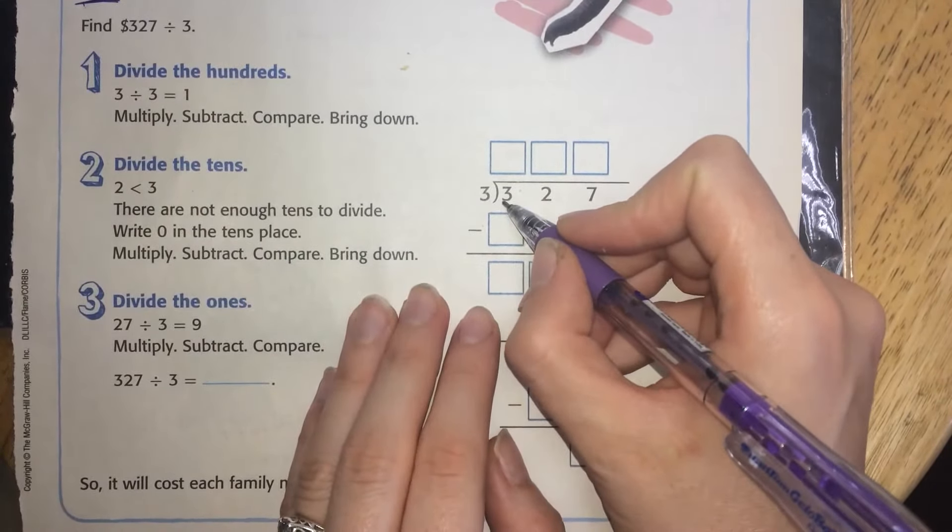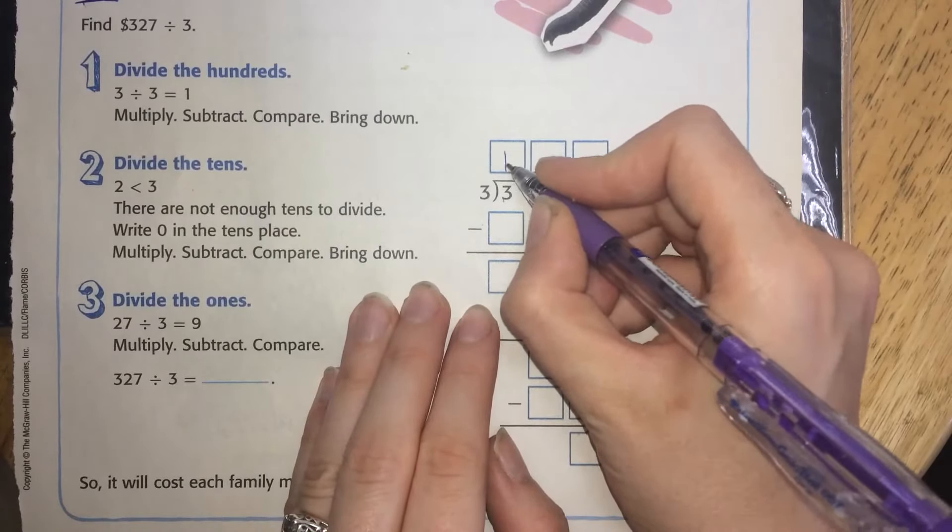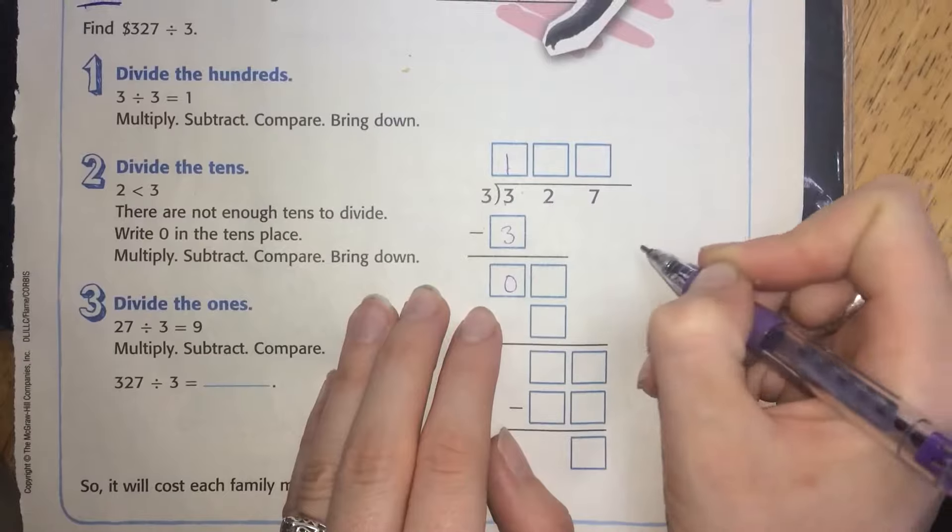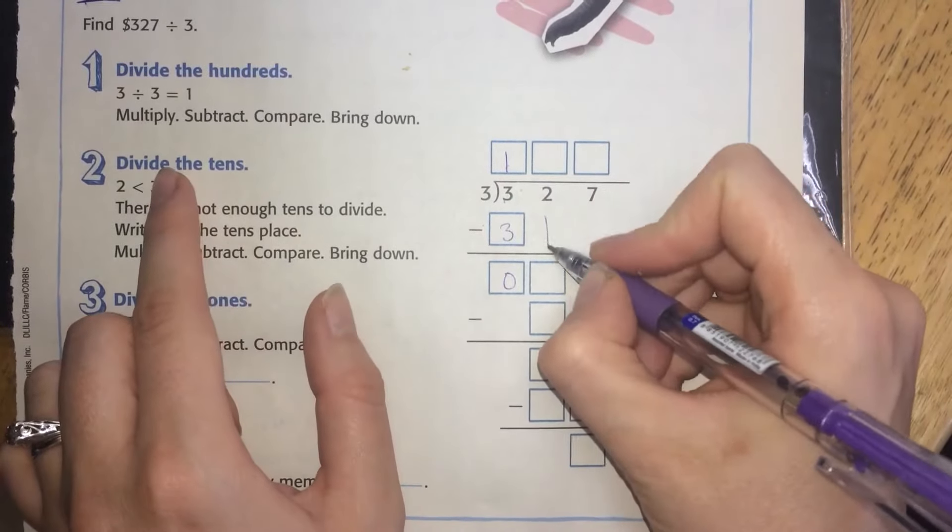3 divided by 3 is 1. So 1 times 3 is 3. 3 minus 3 is 0. Now we bring down the 2.